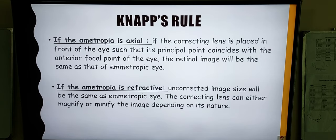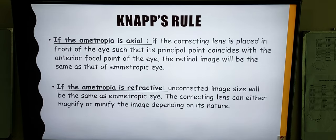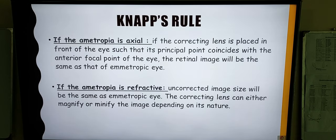In order to understand the change in retinal image sizes, we will discuss Knapp's rule, which states that if the ametropia is axial and the correcting lens is placed in front of the eye such that its principal focus coincides with the anterior focal point of the eye, the retinal image will be the same as that of the emmetropic eye. So for axial ametropia, if the lens is at the anterior focus of the eye, there will be no change in the retinal image size. However, in refractive ametropia, the uncorrected image size will be the same as that of the emmetropic eye, but when a correcting lens is used, whether convex or concave, the retinal image size will be either magnified or minified depending on the nature of the lens.